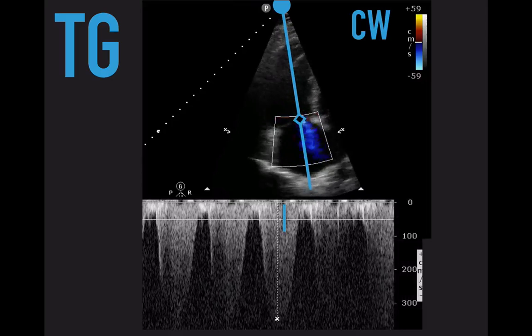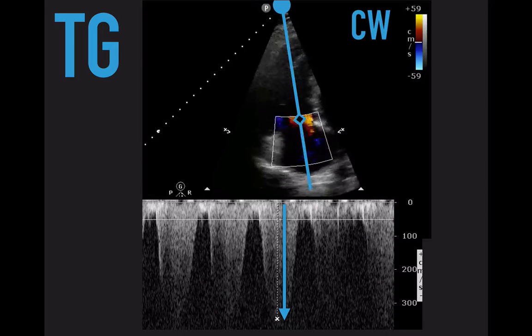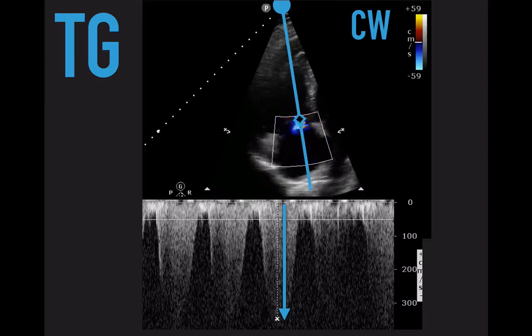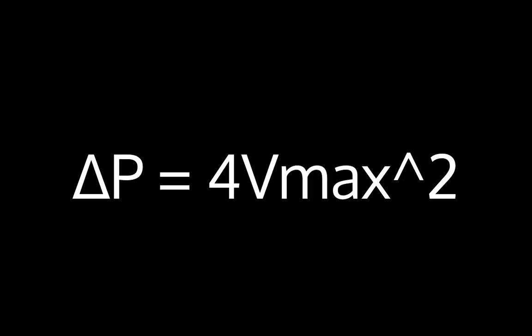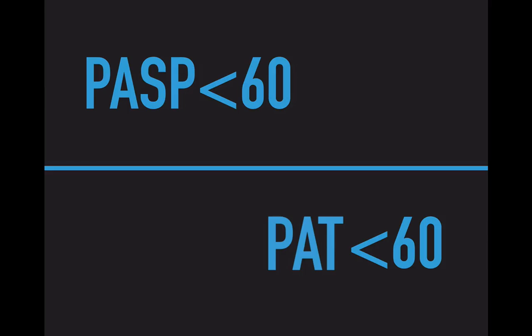You get these swaths of blood flow and all you're going to measure is the peak. When you get that peak, throw it into the equation on your ultrasound machine and it spits out a number for you. Usually the ultrasound machine will also take the right atrial pressure into the calculation and give you the PA systolic pressure directly. Here's the formula if your machine doesn't have the calculation, and there's also a link to a calculator online at ultrasoundoftheweek.com. Remember: PA systolic pressure less than 60 — that's half the 60-60 sign.